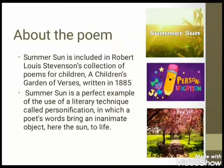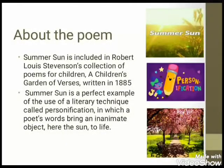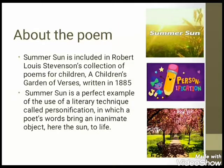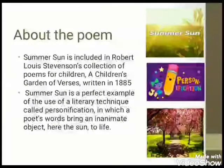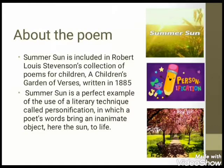'Summer Sun' is a perfect example of the literary technique called personification, in which a poet's words bring an inanimate object — here, the Sun — to life. Personification is basically a literary technique where you give a human quality to a non-living thing, most often to give a nice look to the poem. In this poem, Robert Louis Stevenson has given the Sun a life, conveyed the Sun as a living object, referred to the Sun as a man, and used the pronoun 'he' for the Sun. This technique of personification is used throughout the poem.